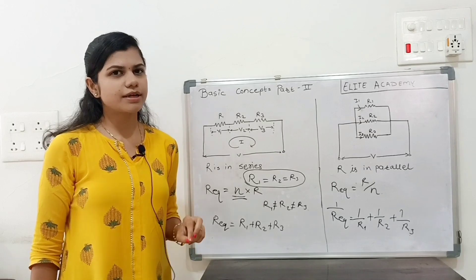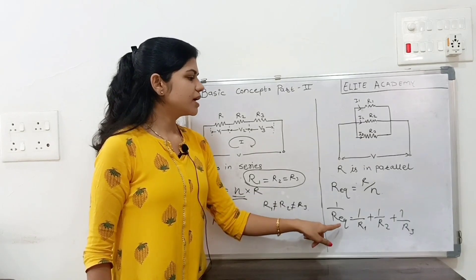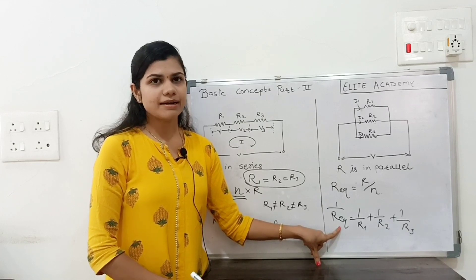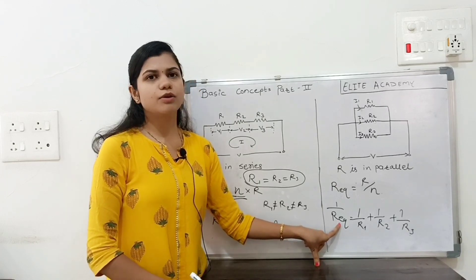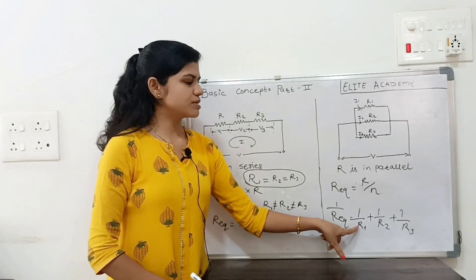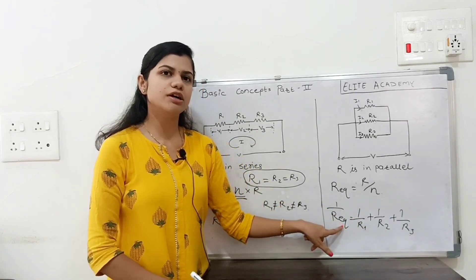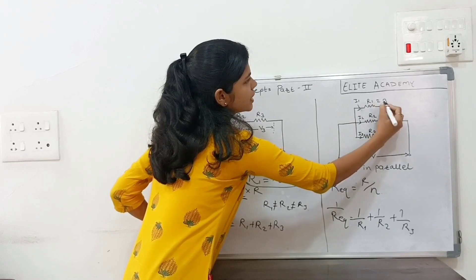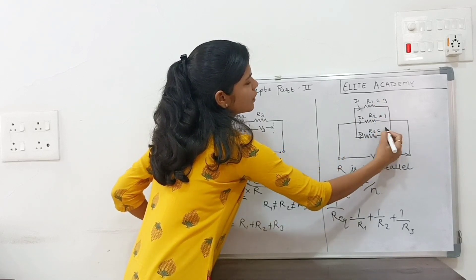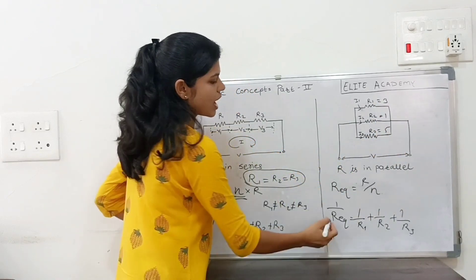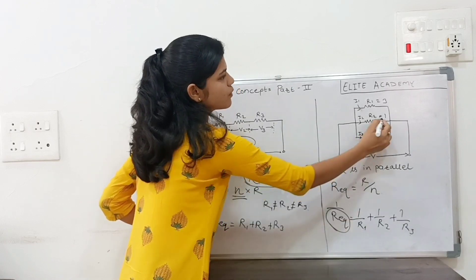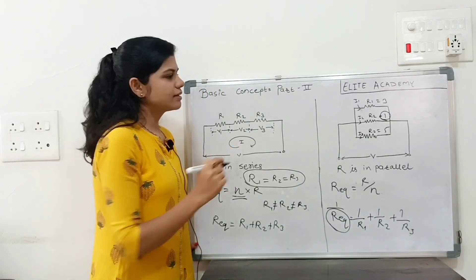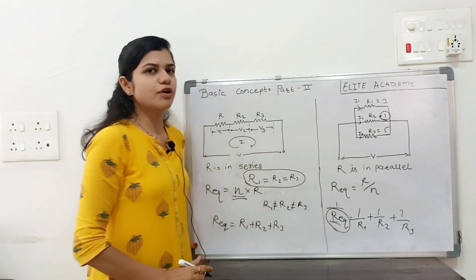One shortcut trick: when R equivalent is asked in an MCQ for a parallel connection, R equivalent's value is always less than any of the individual resistances given. So in an MCQ, whichever option is less than R1 will be your answer for R equivalent.